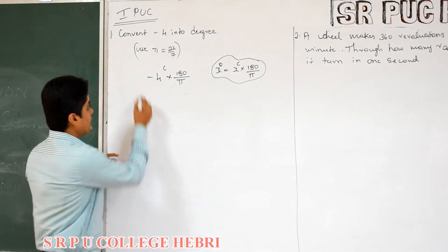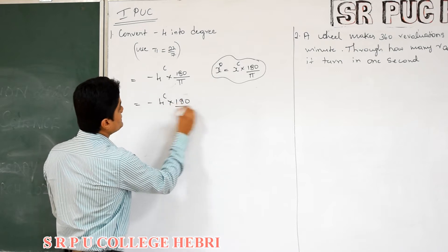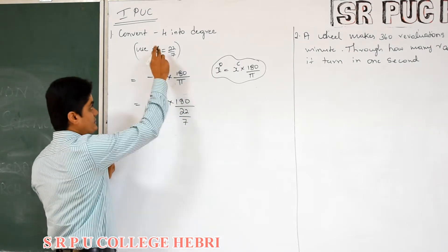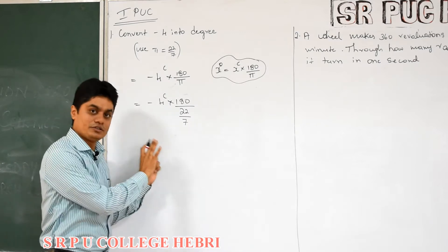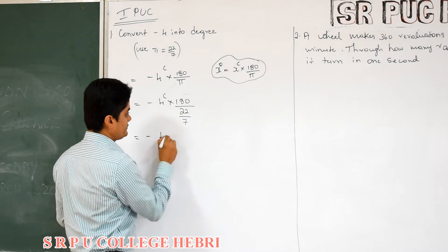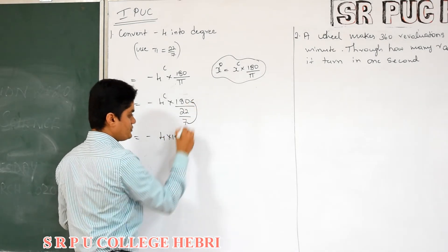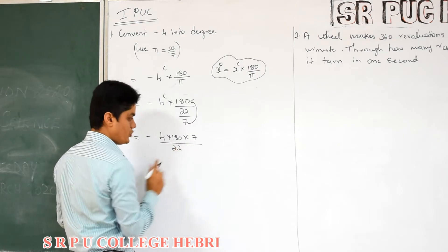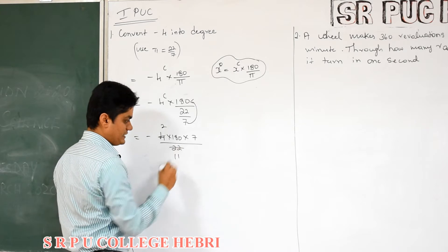It is given that use pi equal to 22 by 7. It will be given in the question; even if it is not given, you use it directly. So, keep the minus sign out as it is: 4 into 180, this will move up, into 7 divided by 22. You can simplify like this — 2 times, 11 times.